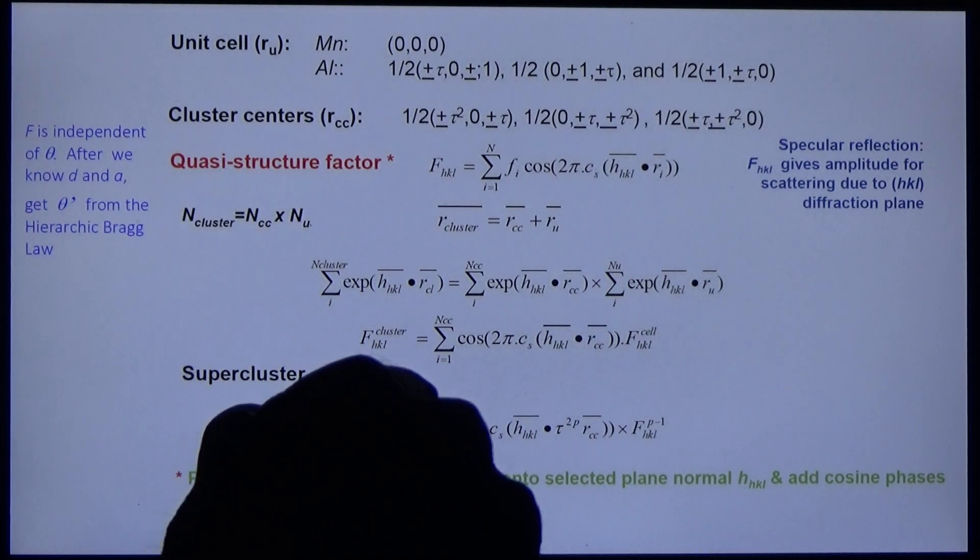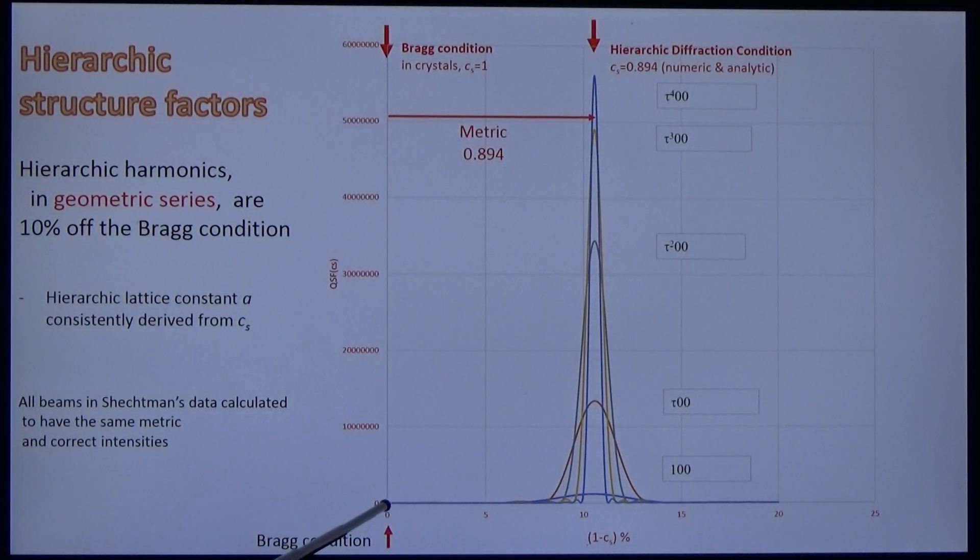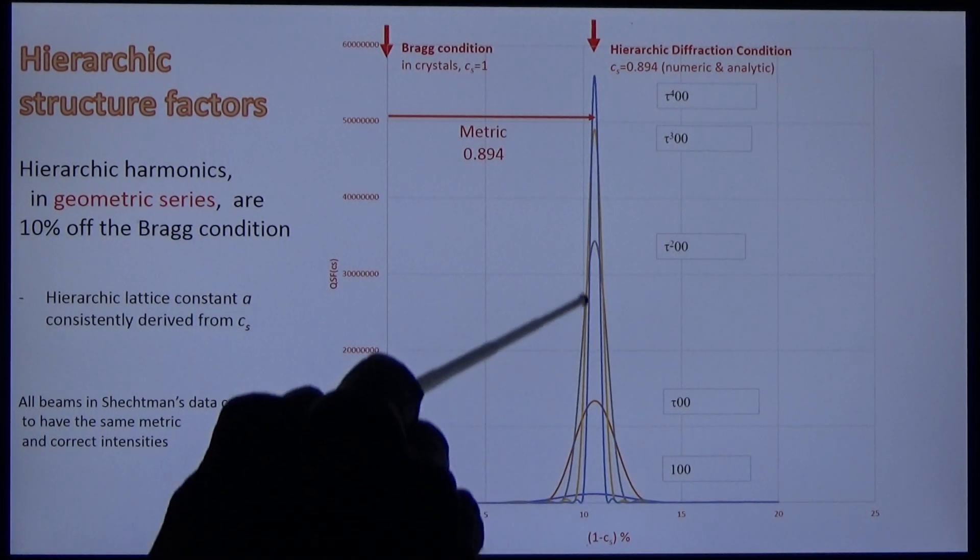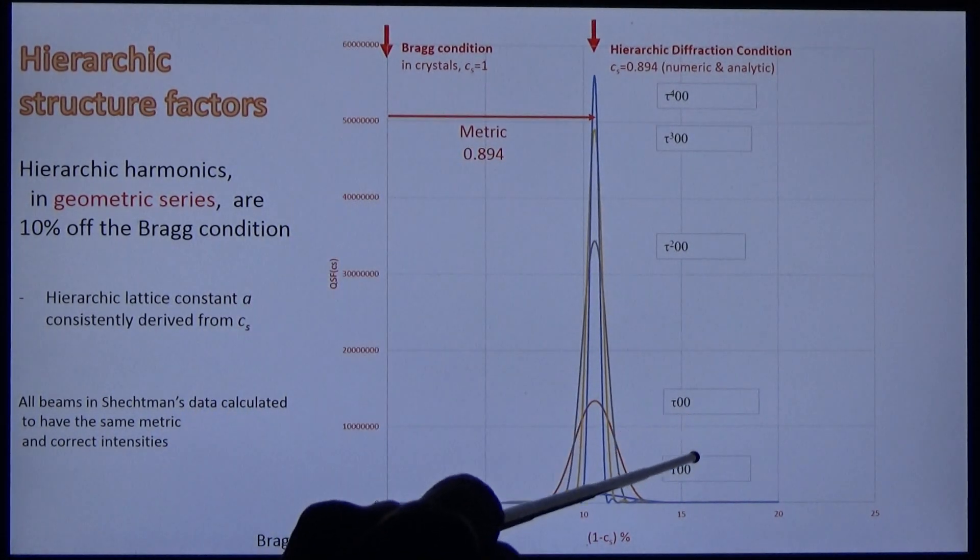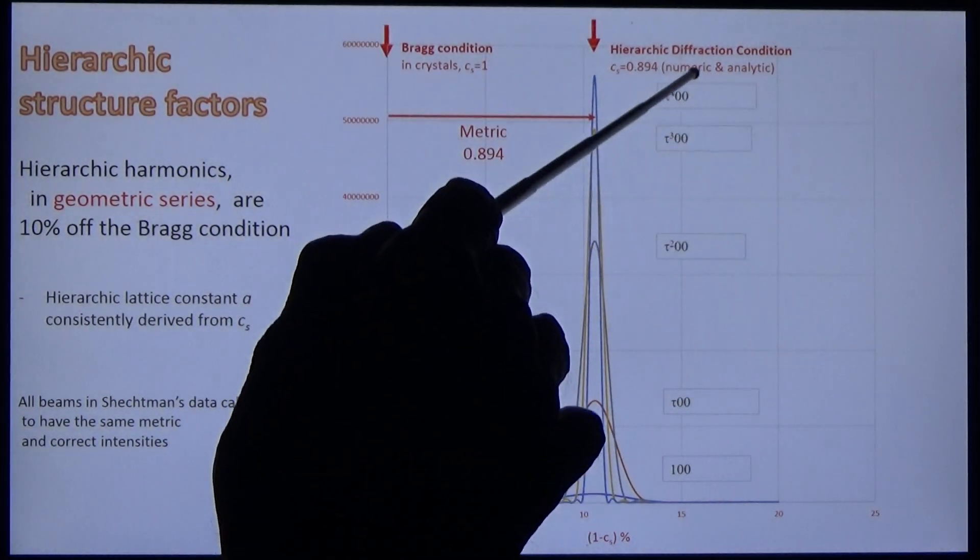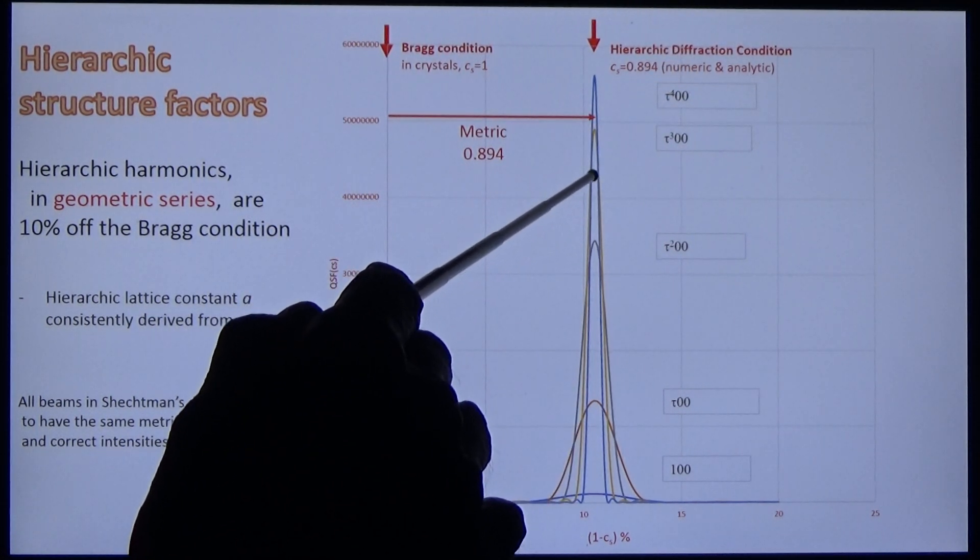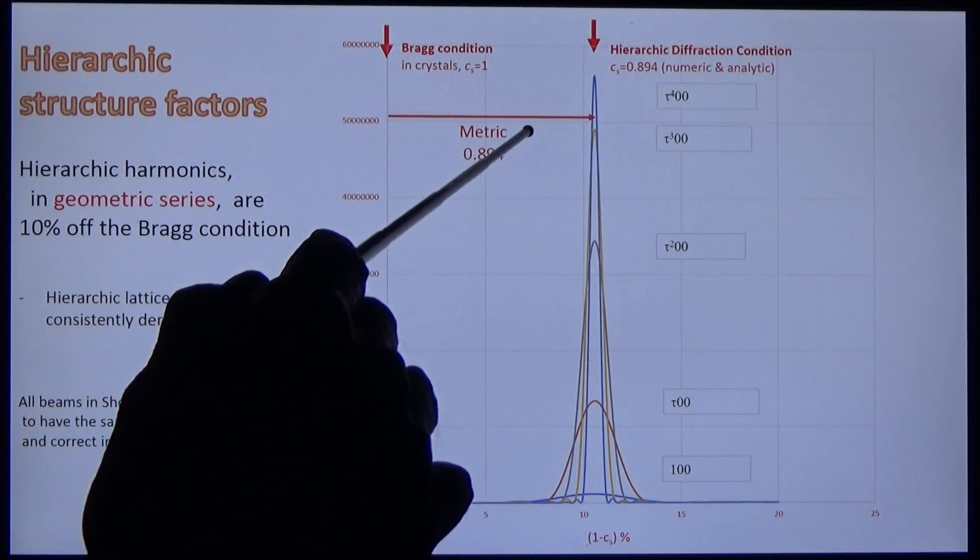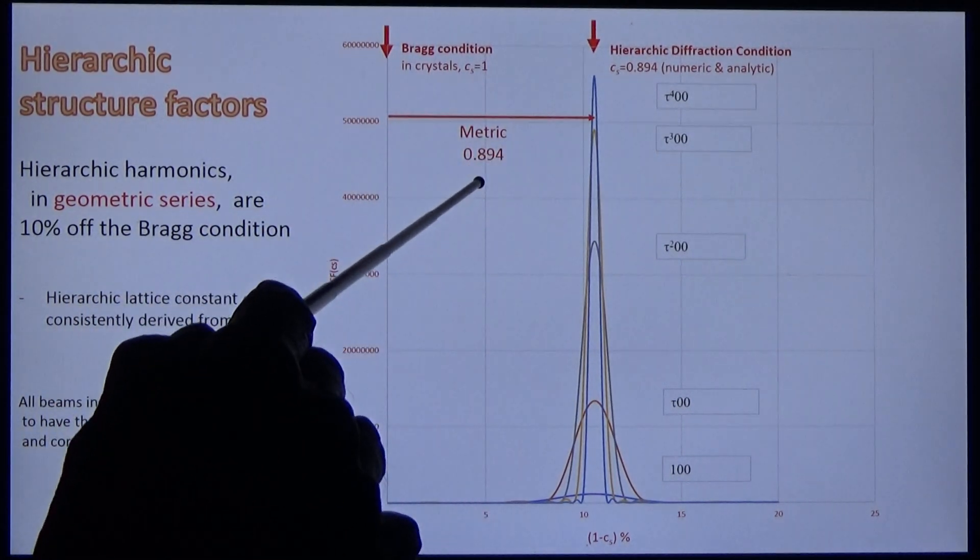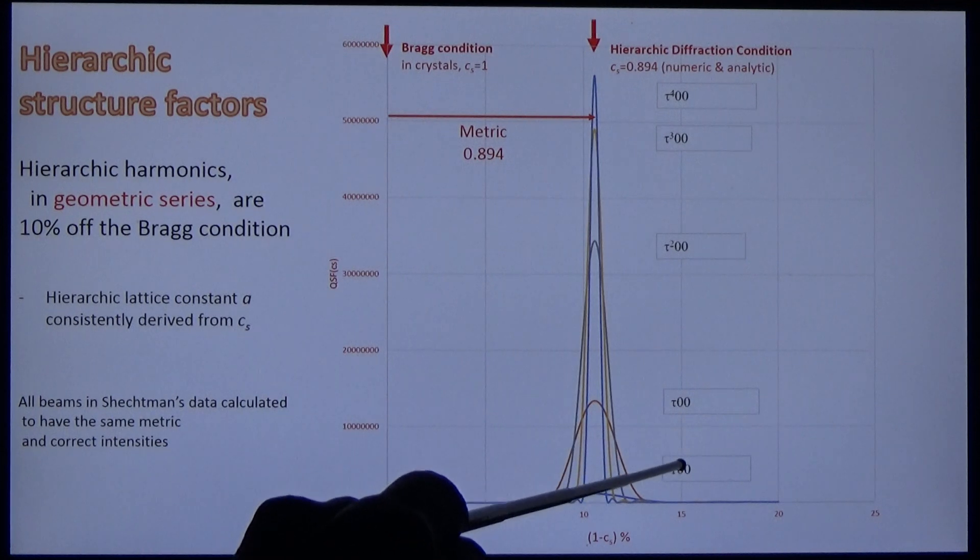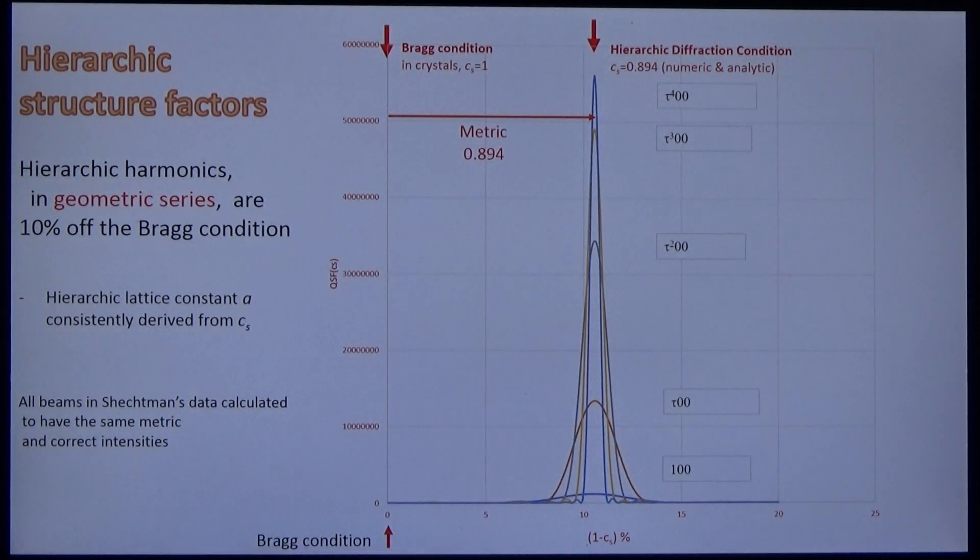And what's the result? There is no Bragg diffraction. If there were Bragg diffraction, it would occur on the ordinate axis where CS equals 1. But scanning CS, the quasi-Bragg peaks pop up at the quasi-Bragg condition. Illustrated here are the four beams that we started with, occurring at a divergence from the Bragg condition. The divergence is equal to the metric 0.894. It's the same not only for these peaks but for all the beams on Shetman's data—it's a universal number.